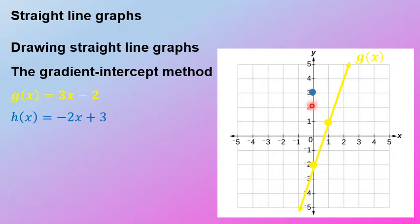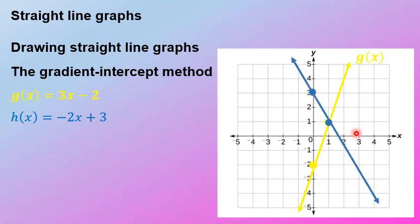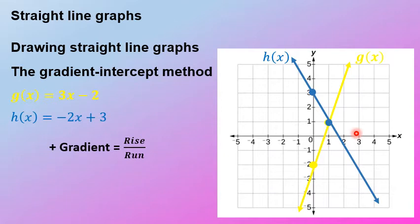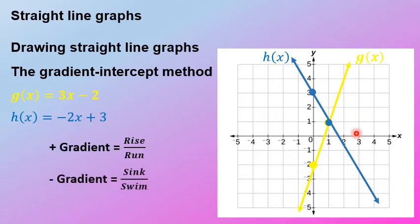If it's a negative gradient it's sink over swim — down and to the right. Force negative 2 into a fraction: negative 2 over 1. So you go down with 2 and across with 1. Looking at the yellow graph g(x) — we started at negative 2 and rose with 3, ran with 1. For the blue graph h(x), because it's negative, we sink with 2 and swim with 1. Plot that next dot, draw and extend, and call it h(x).